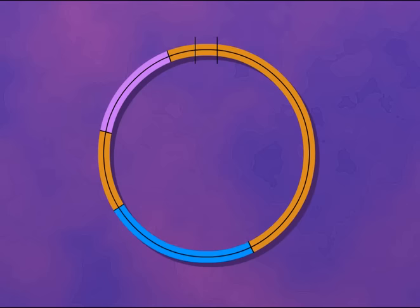Plasmids can be good cloning vectors because they carry an origin of replication and are therefore able to replicate independently within a cell.